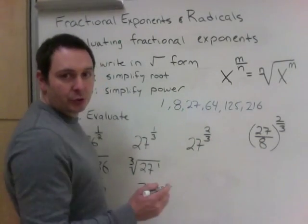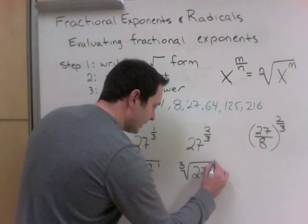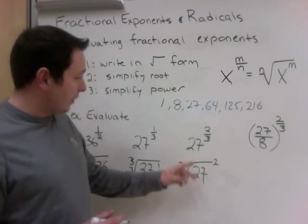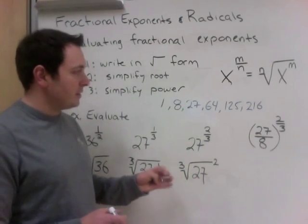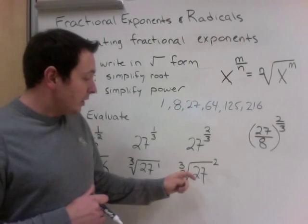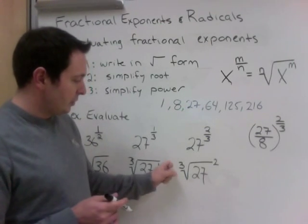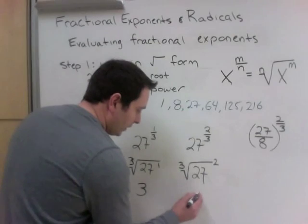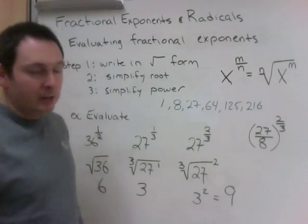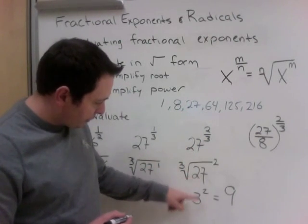For 27 to the power of 2 thirds — a slightly trickier one. Using boots and hats or the tree method, we get the cube root of 27 squared. Do the roots first: the cube root of 27 is 3, and we still have that squared hanging around. 3 squared is 9. So 27 to the power of 2 thirds equals 9.